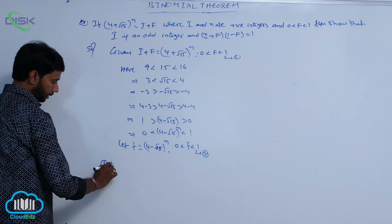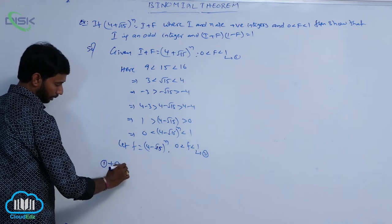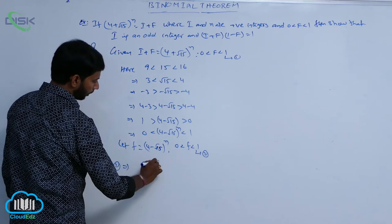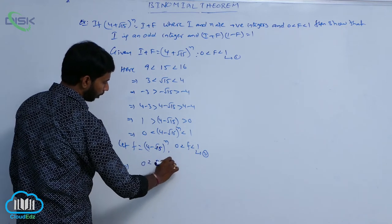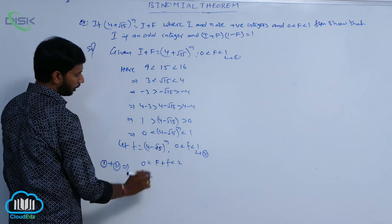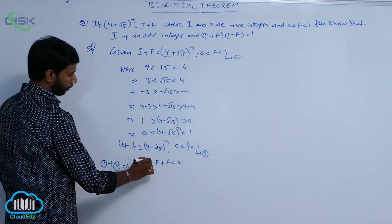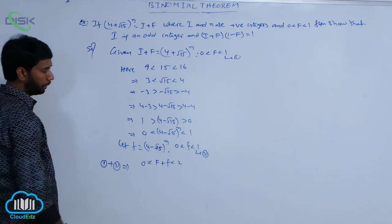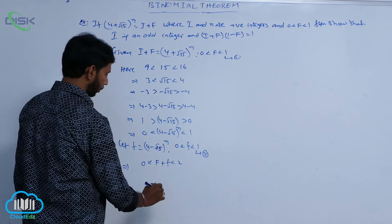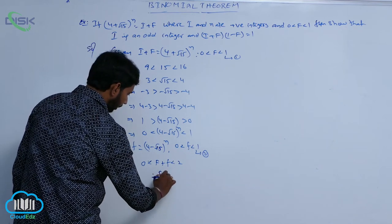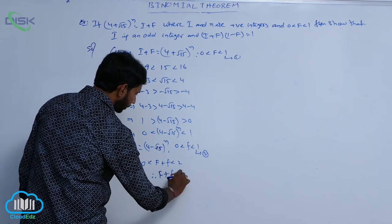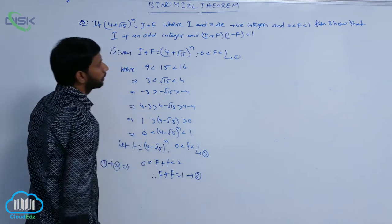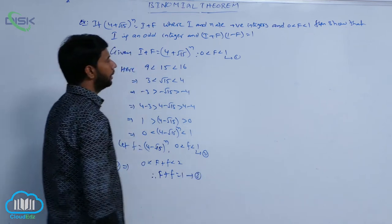Conditions 1 and 2 together imply: 0 < F + f' < 2. The only integer between 0 and 2 is 1. Therefore, F + f' = 1. That is condition number 3.